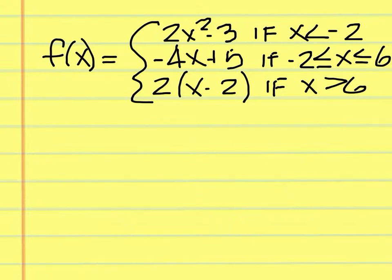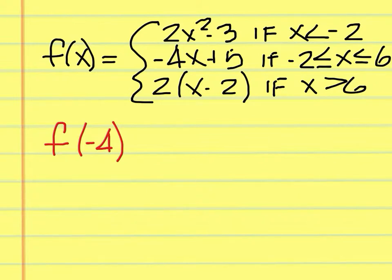So the problem is this: find f of negative 4. Well, f of negative 4 must fall into one of those three categories. Which function — 1, 2, or 3 in order top to bottom — would we use to evaluate f of negative 4?